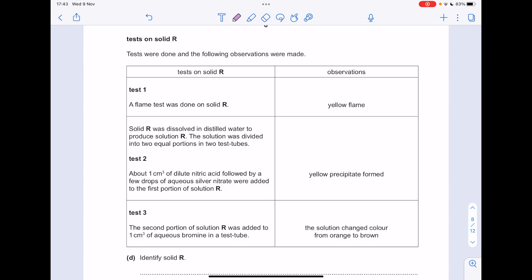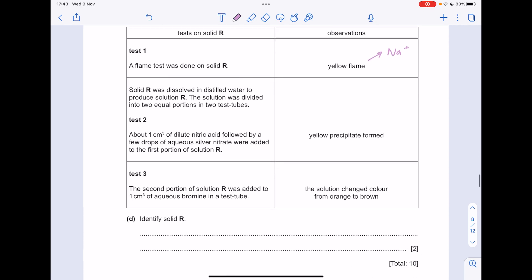Test on solid R. Tests were done and the following observations were made. A flame test was done on solid R and you get a yellow flame. That is going to therefore mean that the sodium ions present. Solid R was dissolved in distilled water to produce solution R. The solution was divided into two equal portions in test tubes. For test tube, around one centimetres cubed of dilute nitric acid followed by silver nitrate was added and a yellow precipitate formed. So if you're adding nitric acid and then silver nitrate, it means you're testing for group 7, so the halides.